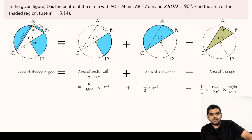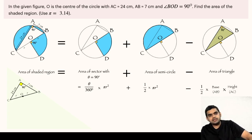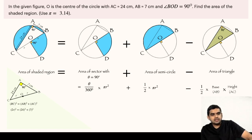In order to compute the area of the shaded region, we must first find the value of r. Let us analyze triangle BAC. BC will be the diameter, which is twice the radius, and the other two legs are given: AB is 7 and AC is 24. Applying the Pythagorean theorem, BC squared equals AB squared plus AC squared. Substituting 2r for BC, we get (2r)² = 24² + 7². Solving this, we get r = 25/2, or 12.5 centimeters.